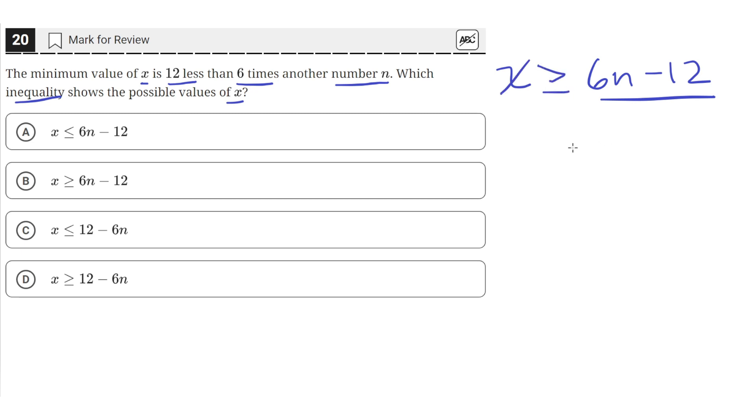And the only answer choice that represents this is answer choice B: x is greater than or equal to 6n minus 12.